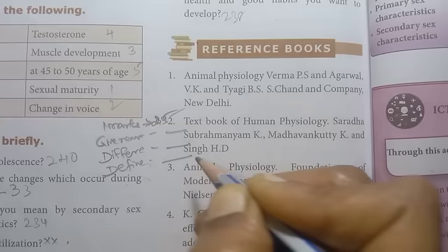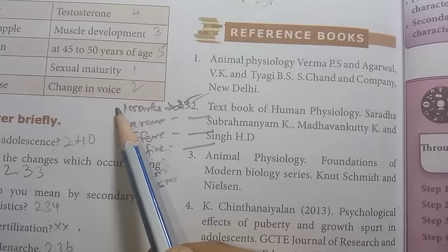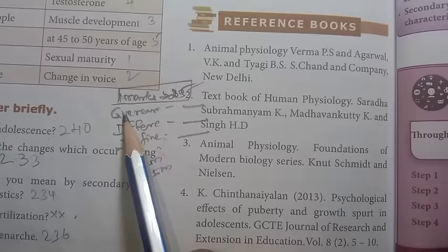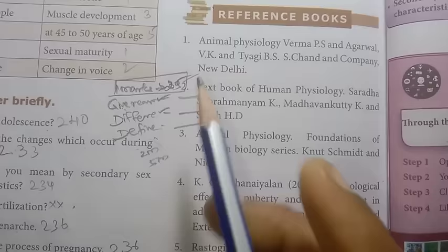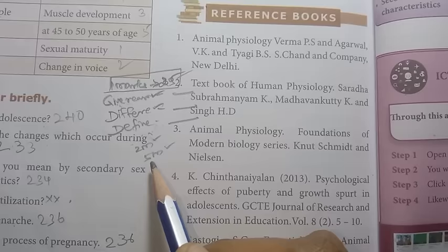First, one mark is important, complete the full one mark. Next, give reasons, complete all give reasons. Next, differentiate questions, complete those. Define, if there are define questions, answer them. Two marks, five marks, this is complete. If you have 4 marks score, you will cover the total portions. First, 1 mark, give reasons, differentiate questions, definitions. Next, 2 marks, 5 marks, very very important.